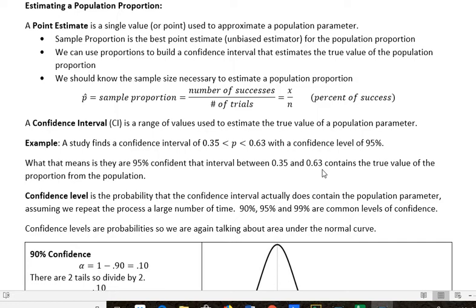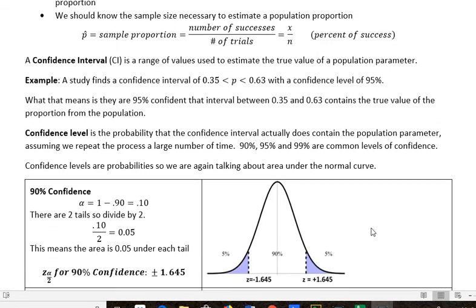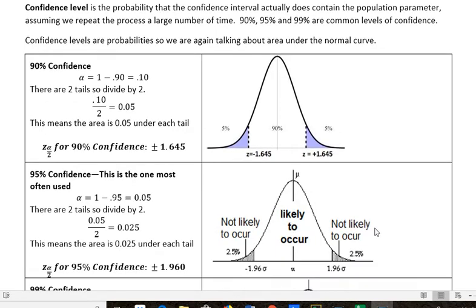A confidence level is the probability that the confidence interval actually does contain that population parameter. The example we just saw was 95%, but we can also use 90, 95, or 99. These are the most common ones; 95 is the most common of all. When we're talking about confidence levels, we're talking about probabilities, which goes back to area under the curve from previous chapters.